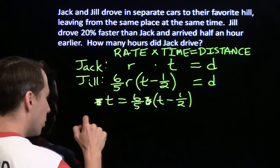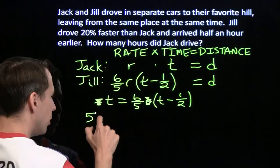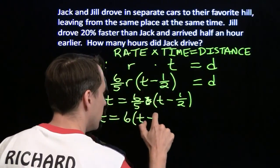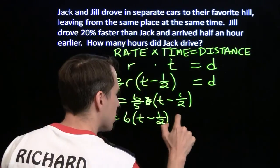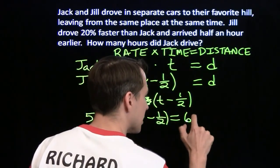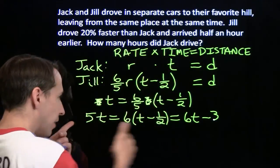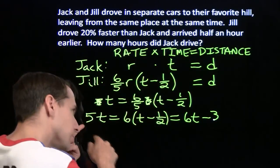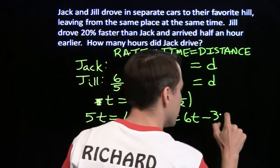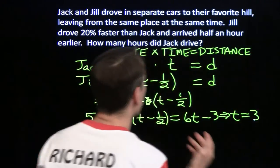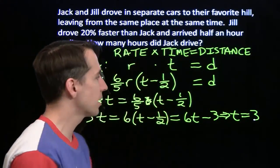So now we're going to multiply both sides by 5. We get 5t equals 6 times the difference t minus one-half. Expand that product, we get 6t minus 3. So now we have 5t equals 6t minus 3. We'll subtract 5t from both sides, add 3 to both sides, and we'll get t equals 3. Now we know how many hours Jack drove.